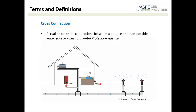First, let's define some terms. In order for contaminants to get into the water distribution system as a result of backflow, you need three things: a cross-connection, a source of contamination, and a backflow event. Let's break down that first thing — a cross-connection.